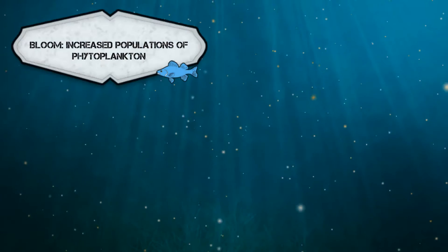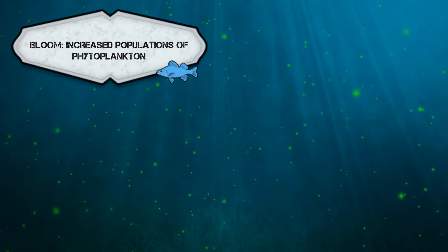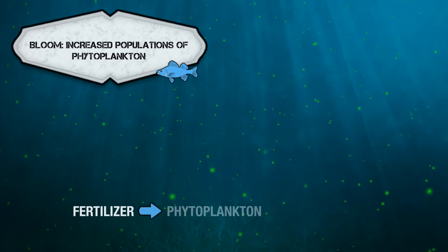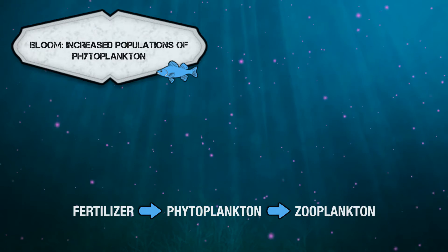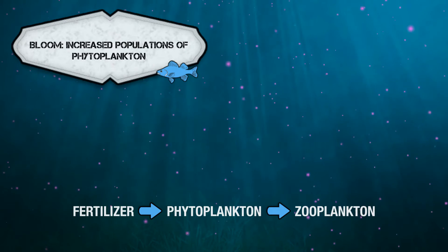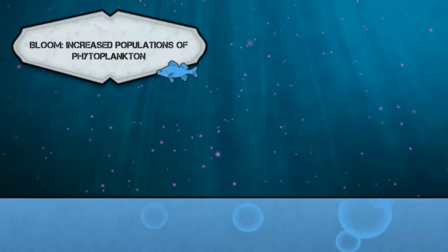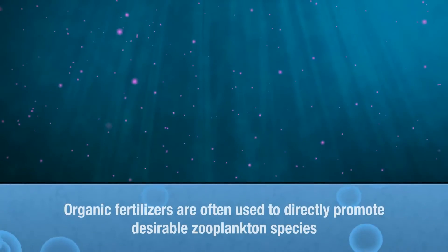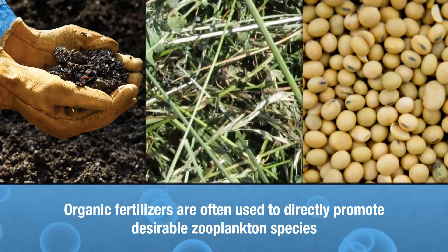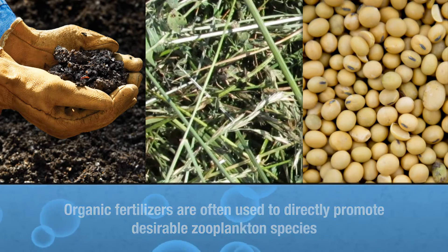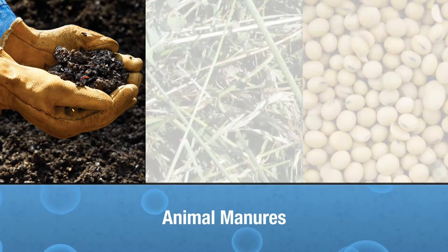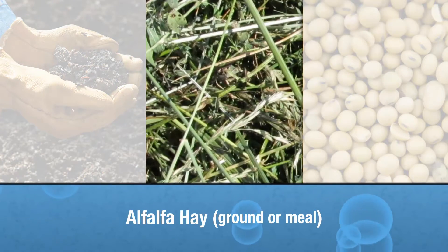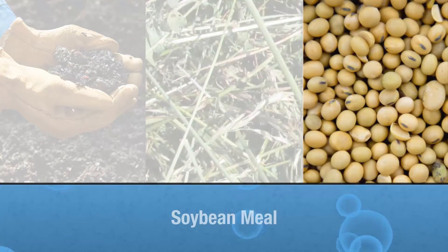These increased populations of phytoplankton, often called a bloom, will then increase the number of zooplankton in the pond, which eat the phytoplankton. Organic fertilizers are often used to directly promote desirable zooplankton species. Organic fertilizers may be animal manures, ground or meal alfalfa hay, or soybean meal.